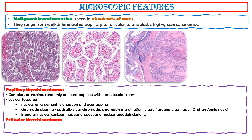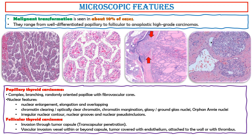Follicular thyroid carcinoma. This photo shows invasion through the tumor capsule — transcapsular penetration — and vascular invasion within or beyond the capsule, with tumor covered with endothelium attached to the wall or with thrombus.